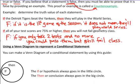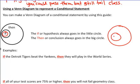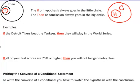Let's talk about how to use a Venn diagram. A Venn diagram is a circle within a circle. In a conditional statement, the 'if' is the hypothesis and the 'then' is the conclusion. The hypothesis goes inside the little circle, and the conclusion goes in the big circle. I'm going to draw a Venn diagram for these two examples.